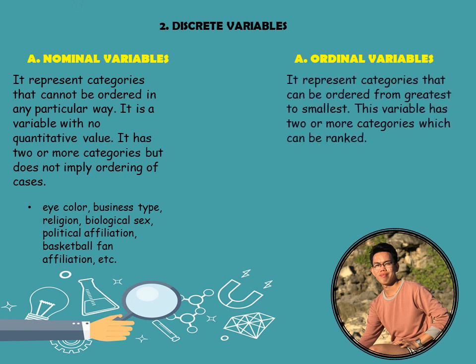Ordinal variables represent categories that can be ordered from greatest to smallest. This variable has two or more categories which can be ranked. Ordinal variables are similar to nominal variables in that they involve naming and labeling, but they are different because nominal variables have no ranking or ordering, while ordinal variables do have ranking. For example, educational level and income brackets. Educational level has categories with ranking — for example: tertiary, secondary, senior high, and junior high. There is a highest and a lowest level.